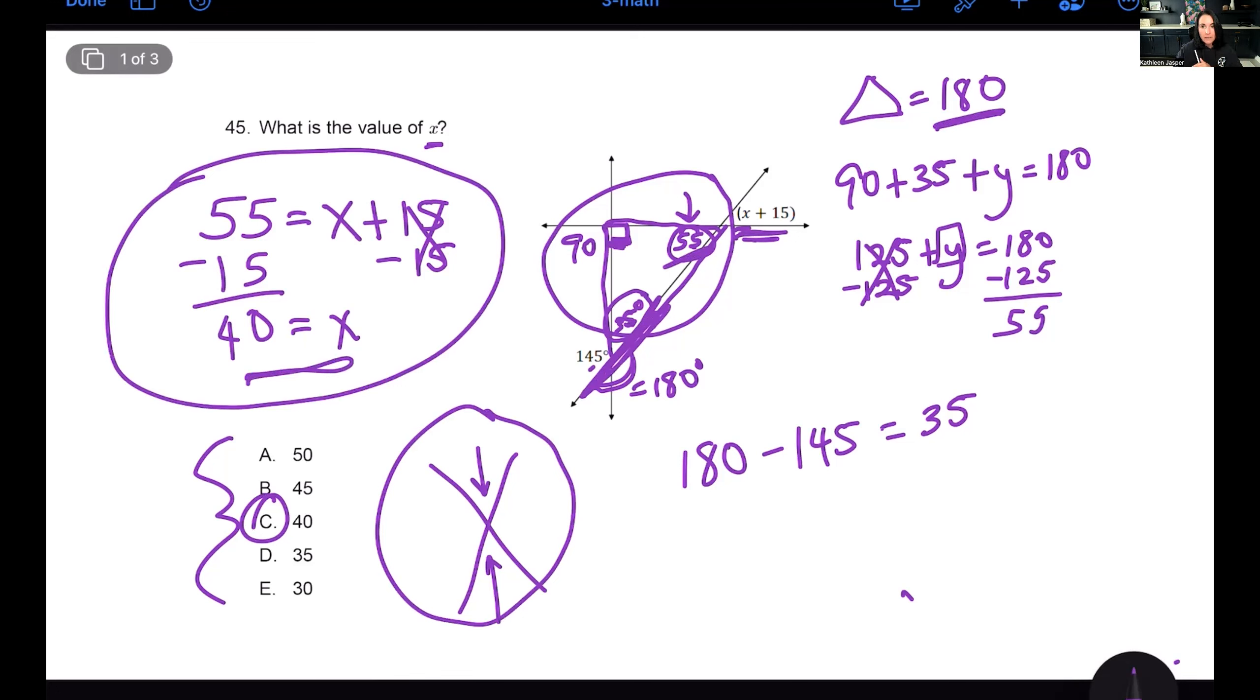We know that this line is a straight line here and supplementary angles together equal 180. Then I took a look at this triangle here and was able to find this particular angle. We use algebra and we got our correct answer with x equals 40. So lots of skills going on in this, but just slow down and remember supplementary rules of triangles. We cover them all in the book.